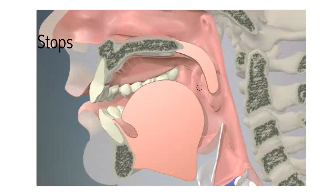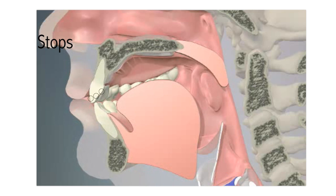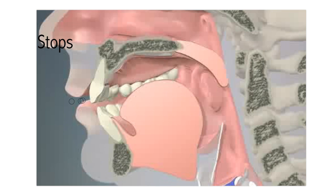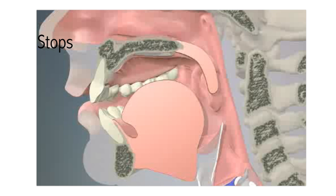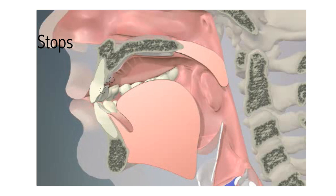Stops. A stop is a manner of articulation where two articulators are brought together to completely block the airflow through the vocal tract. When the block is released, the air rushes out and a sound is produced. A consonant is a stop if you have to actually release the block — for example, pull your lips apart or take your tongue away from the roof of your mouth — before you can hear a sound. Try bringing your lips together as if you want to make a P, but keep them pressed together while you try to push the air out. This makes no sound — it is only when you pull the lips apart so the air can escape that the sound P is made.